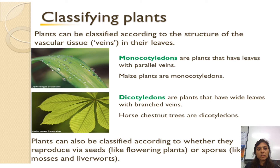These leaves are called dicotyledon, and what that means is the plant has a wider leaf with a broad range of veins with gaps in between each other. You can further classify plants according to whether they produce flowering seeds or they produce spores.